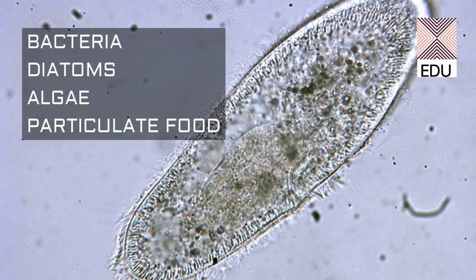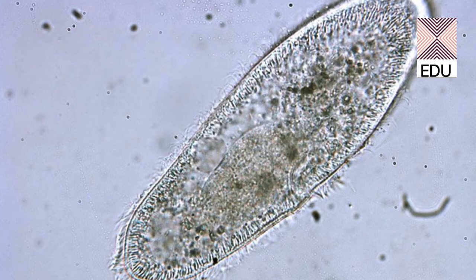The food of paramecium can include bacteria. In a study it has been seen that it can take 2 to 5 million bacteria in 24 hours, so that means paramecium is a very voracious feeder.